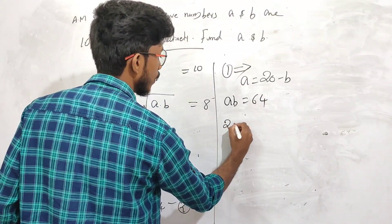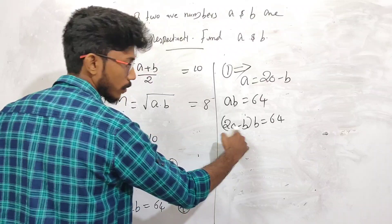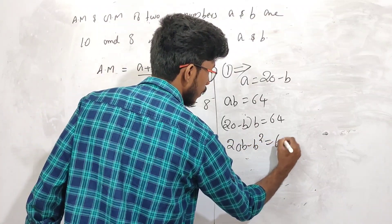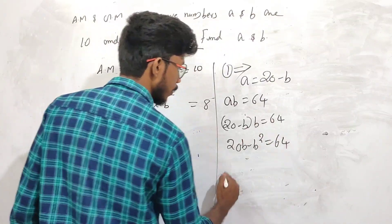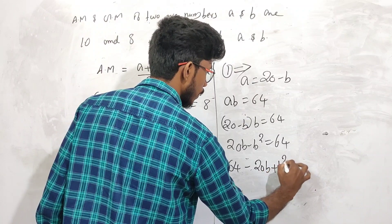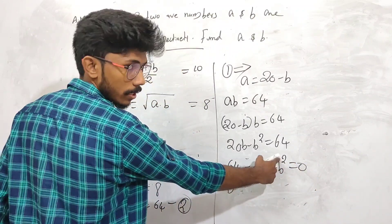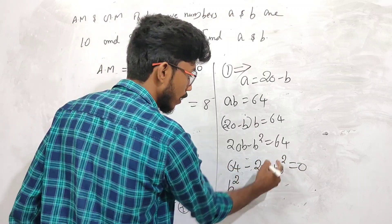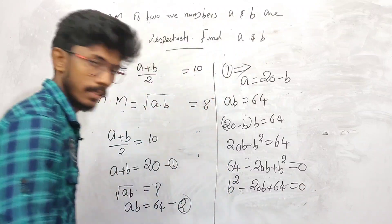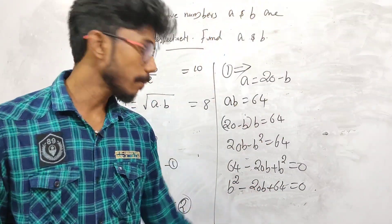Substituting a equals 20 minus b, we get 20 minus b into b equals 64, so 20b minus b squared equals 64. Rearranging, b squared minus 20b plus 64 equals 0. This is a quadratic equation that we will solve for b.